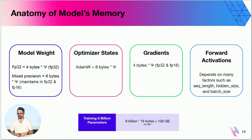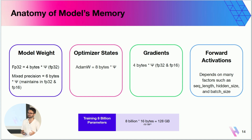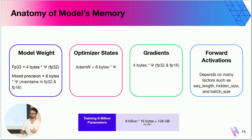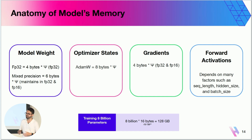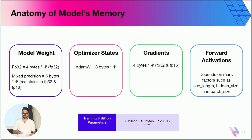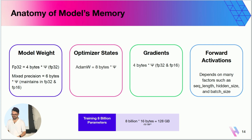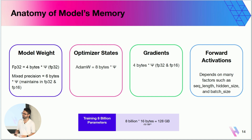Before going deeper into distributed training, I want to talk about the anatomy of model memory — what's actually happening under the hood in terms of what's occupying your memory during training. There are four high-level things taking memory: model weights, optimizer state, gradients, and forward activations. If you're training in full precision FP32, model weights cost 4 bytes per parameter. If using AdamW, optimizer state costs another 8 bytes due to momentum and variance. Gradients also cost 4 bytes per parameter. For an 8 billion parameter model, training requires roughly 128 GB without any optimization — far more than the 32 GB just to store the model weights.